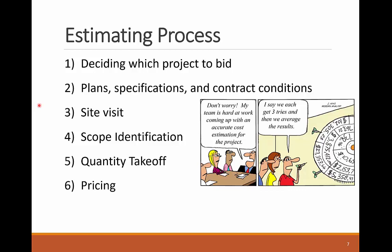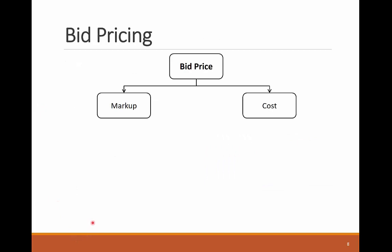Sixth, price each bid item by estimating its unit cost and price. This requires detailed analysis of the operations in each bid item in terms of the resources needed and the sequence of those operations. The pricing step is very critical, so we'll cover next what items need to be addressed when pricing a bid and its work items. You need to structure the bid estimate in two main components: cost and markup. There is a big difference between cost and price, as we'll see next.